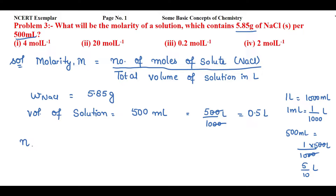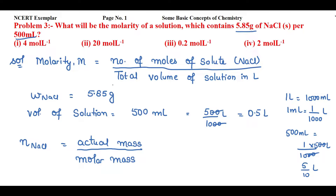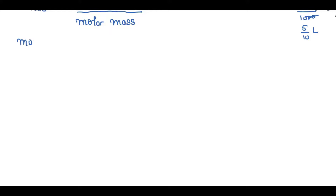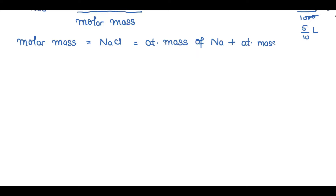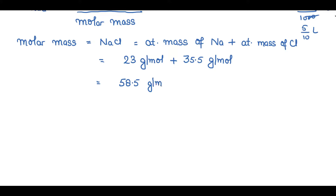The next target is to find the number of moles of solute, denoted by n(NaCl). It equals actual mass of solute divided by molar mass of solute. The actual mass is 5.85 grams. For molar mass of NaCl, we add the atomic mass of sodium (23 g/mol) plus the atomic mass of chlorine (35.5 g/mol), giving 58.5 g/mol.